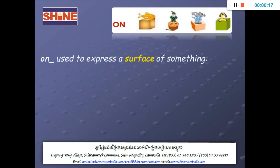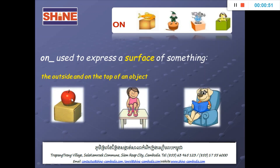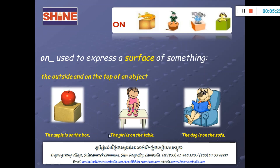On. 'On' is used to express a surface of something. Let's see what 'surface' means. Surface means the outside and on the top of an object. Look at the picture here — the outside and on the top of an object. Let's see some pictures. The apple is on the box. The girl is on the table. The dog is on the sofa.